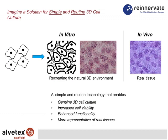ReInnovate has developed a simple solution for routine three-dimensional cell culture, based on recreating the natural three-dimensional environment. This image shows a population of cells grown in Alvatex in 3D, and the same cell type was also grown in vivo by transplantation — very comparable results. Evidence from our customers and collaborators shows that growing cells in 3D can impact cell viability, cell function, and create models more representative of real tissues — a real advance in cell-based assays.